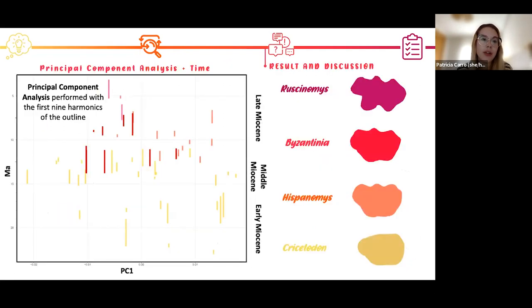So first of all, I'm going to explain the morphological analysis, the morphometric analysis. With the nine harmonics, we performed a principal component analysis. But we retained only the PC1 that explains more than 70% of the variance of the sample. All these bars are the stratigraphic range for these species with the first and the last appearance data.